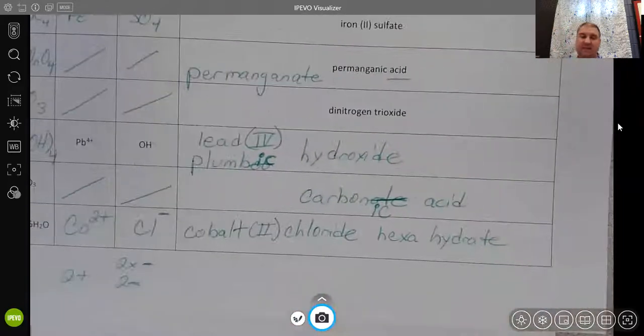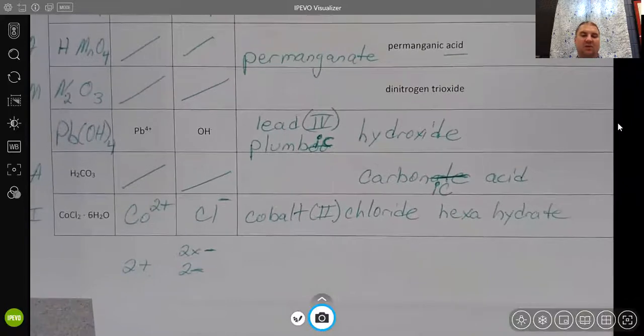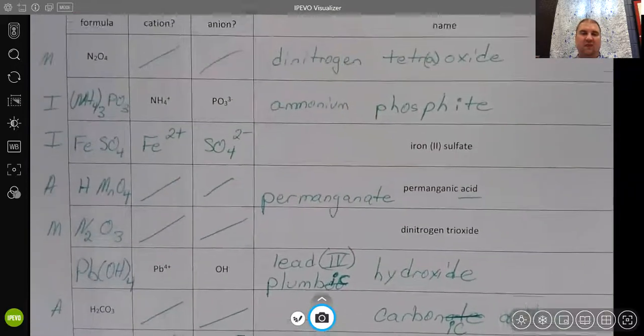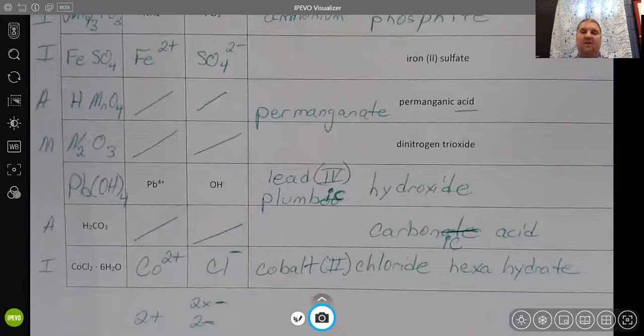And you may even recognize this one now after doing the hydrate percent composition worksheet, where you had two different cobalt two chloride compounds. One was a dihydrate and one was a hexahydrate. So I hope this is helpful for review. Feel free to look back over any of these, ask questions if you still have them. This will be on this upcoming test.